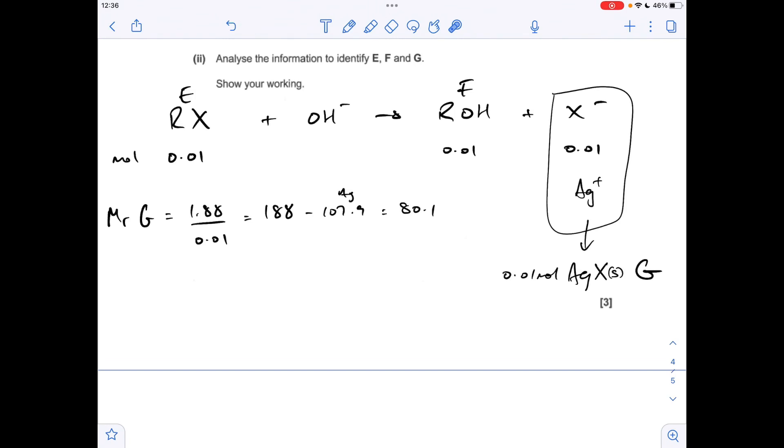Well, bromine is 79.9, so it's going to be a bromide, a silver bromide precipitate.